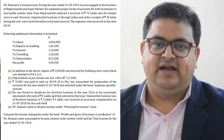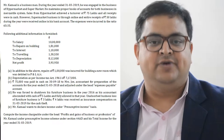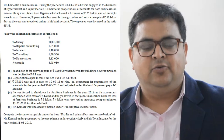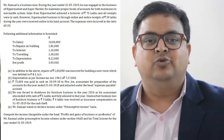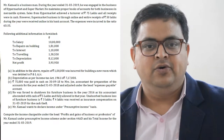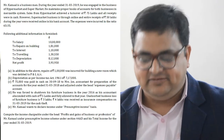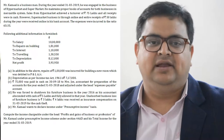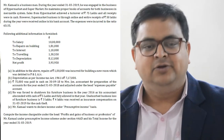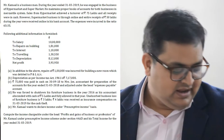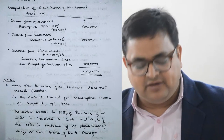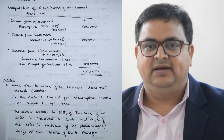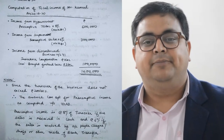Under Section 44AD, if your business turnover is not more than ₹2,00,00,000, you can declare income on presumptive basis. For hypermarket, turnover is ₹75,00,000 and all receipts are cash, so 8% applies - that comes to ₹6,00,000. For supermarket, turnover is ₹50,00,000 and all receipts are online/bank, so 6% applies - that comes to ₹3,00,000. Combined income from both businesses is ₹9,00,000.